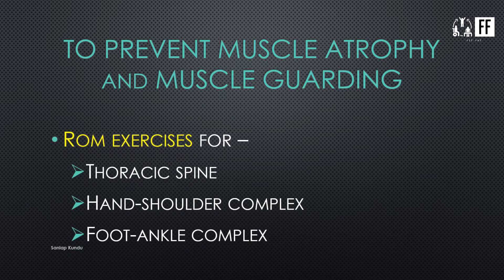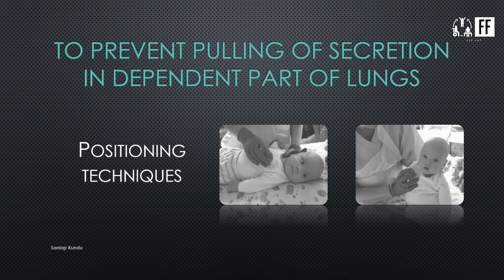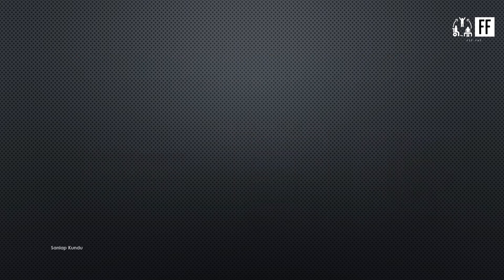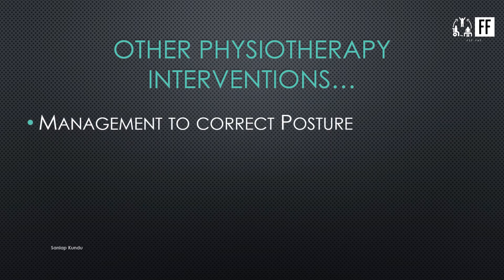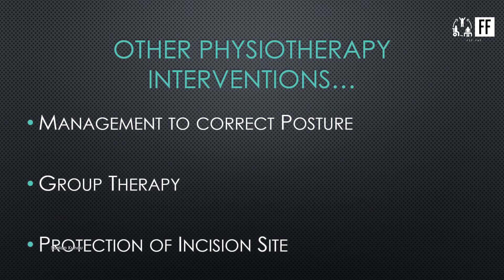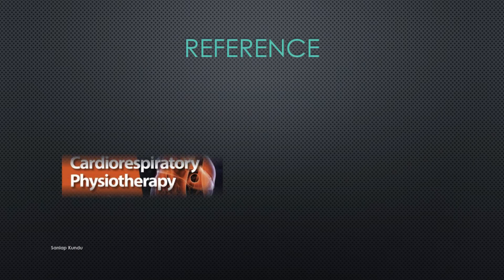To prevent muscle atrophy and muscle guarding, you can use range of motion exercises for the thoracic spine, hand-shoulder complex, and foot-ankle complex. To prevent pooling of secretions in independent parts of the lungs, you can use positioning techniques — here are some images of those techniques. Other physiotherapy interventions include management to correct posture, group therapy, and protection of the incision site.